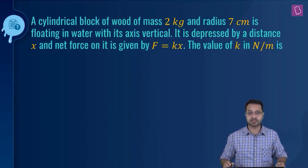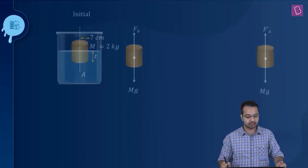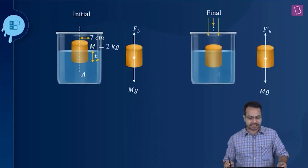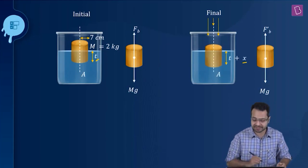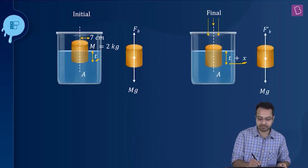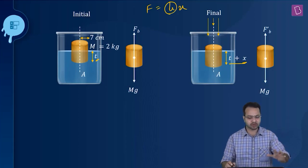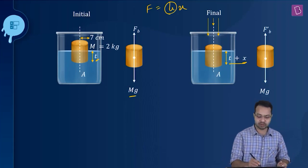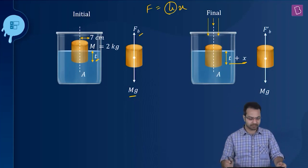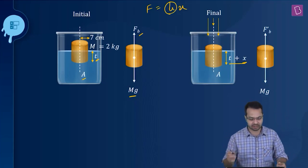Final problem: a cylindrical block of wood of mass 2 kg and radius 7 cm floats in water with its axis vertical. It is depressed by a distance x, and the net force is given by F = kx. We need to find k in N/m. Initially the block floats with length t submerged. After being pushed further by x, the total submerged length is t + x. In the initial condition, weight mg equals buoyant force: mg = t × A × ρ_water × g, where A is the cross-sectional area.